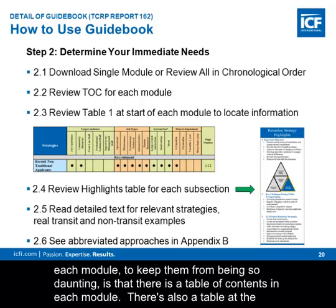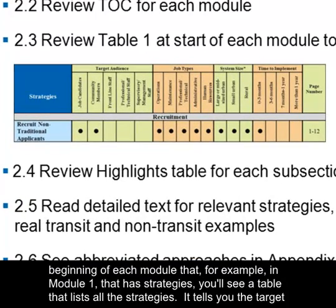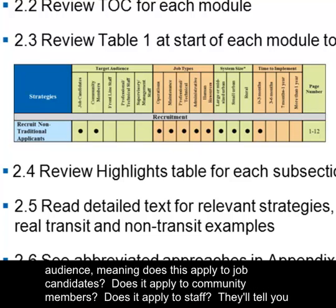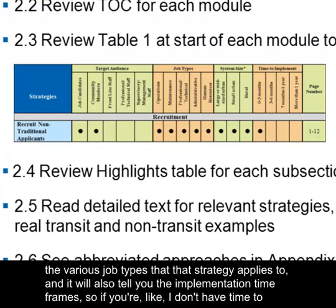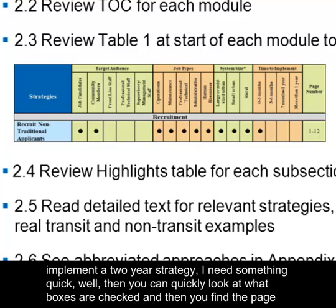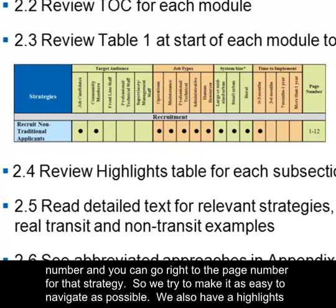To keep the modules from being daunting, there is a table of contents in each module. There's also a table at the beginning of each module — for example, in Module 1, which has strategies, you'll see a table listing all the strategies. It tells you the target audience, whether the strategy applies to job candidates, community members, or staff. It also tells you the various job types and the implementation timeframe. So if you need something quick, you can look at what boxes are checked, find the page number, and go right to that strategy.